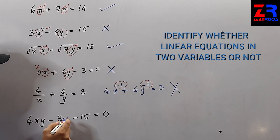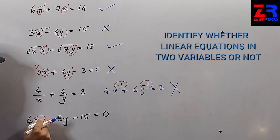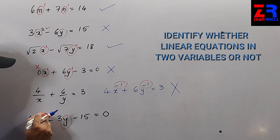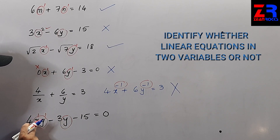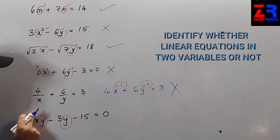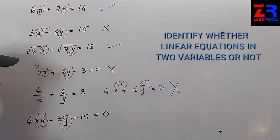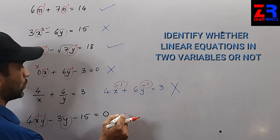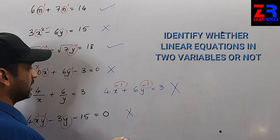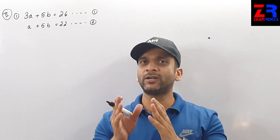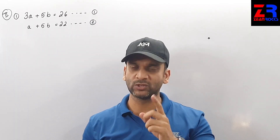The next question: the variables are x and y, but x and y are given together — multiplied. The power of x is 1 and y is 1, so the total degree is 2. That means this is not a linear equation in two variables. This is Practice Set 1.1, Question 2, sub-question 1.